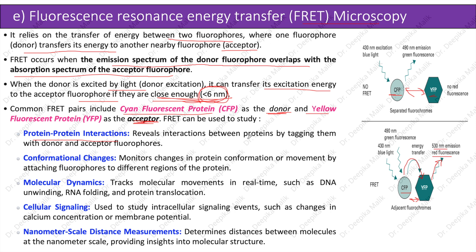Additional applications of FRET include: conformational changes — monitoring changes in protein conformation or movement by attaching fluorophores to different regions; molecular dynamics — tracking molecular movements in real time such as DNA unwinding, RNA folding, and protein translocation; cellular signaling — studying intracellular signaling events such as changes in calcium concentration or membrane potential; and nanometer-scale distance measurements — determining distances between molecules at the nanometer scale to provide insights into molecular structure.